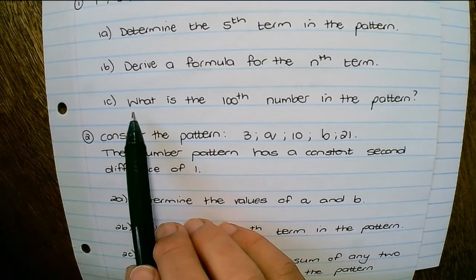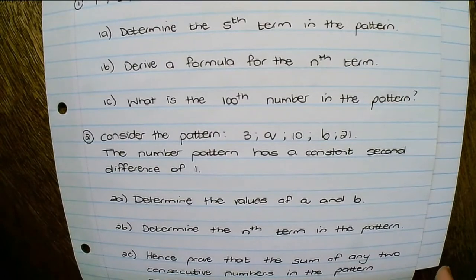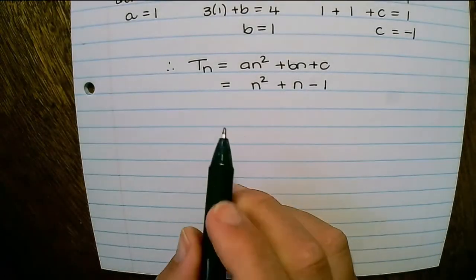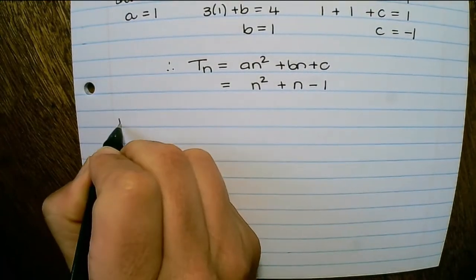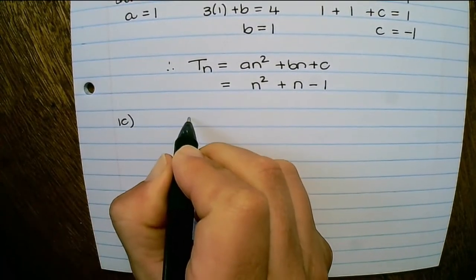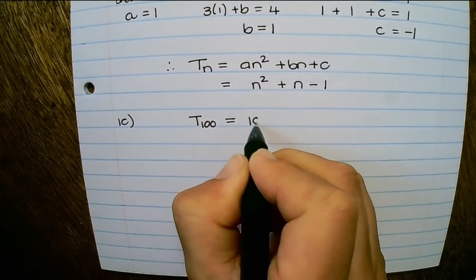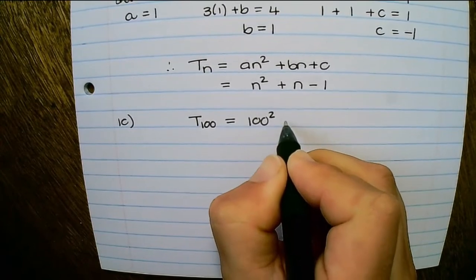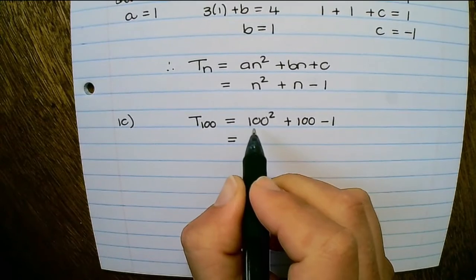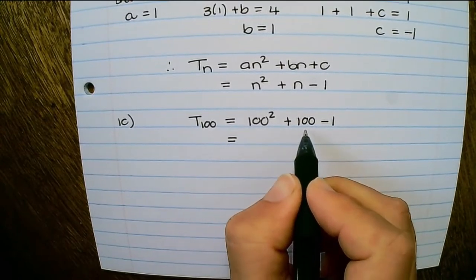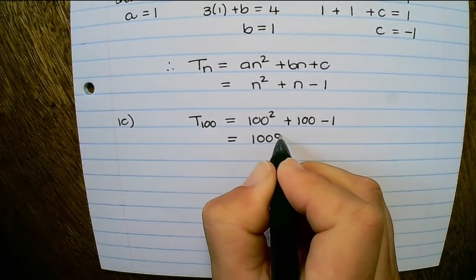Our next question is: what is the hundredth term in the pattern? I need to replace n with 100 in the formula. So T₁₀₀ equals 100 squared plus 100 minus 1, which is 10,100 minus 1, giving 10,099.